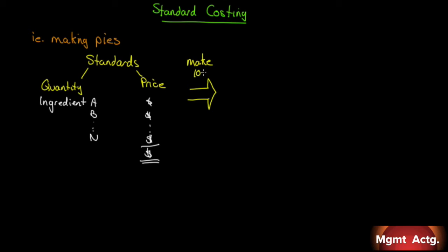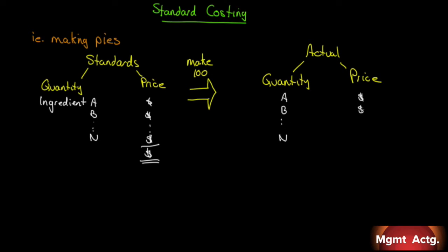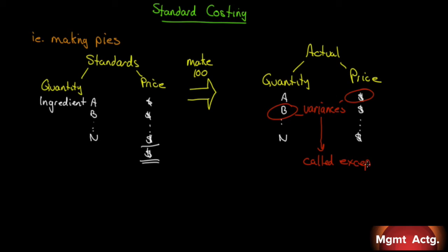Now we're going to make 100 pies. Our actual results: we made 100 pies. We're going to look at the actual quantity we used and the actual price we paid for all our ingredients. In looking at variances, we might say we used way too much of B and paid too much for A. Flexible budgeting doesn't allow us to find these types of variances — variances are also called exceptions. Flexible budgeting allows us to see whether we were over or under budget, favorable or unfavorable, but we don't know whether it was caused by using too much raw material or by raw materials costing too much.